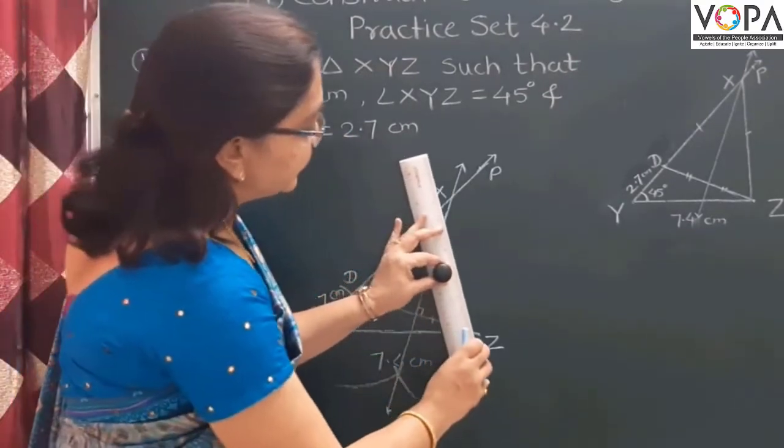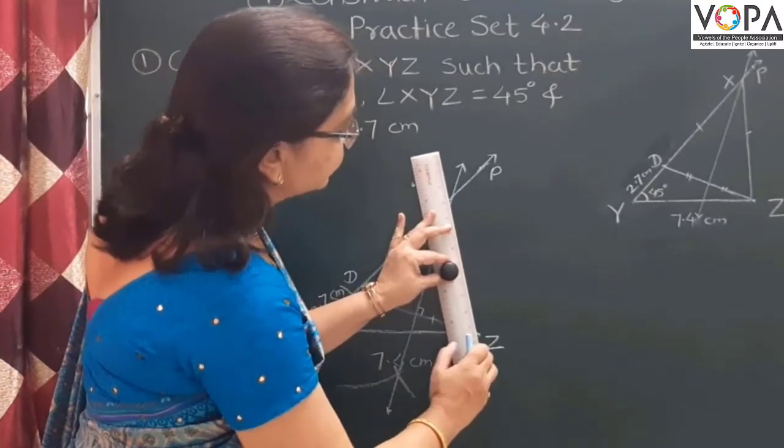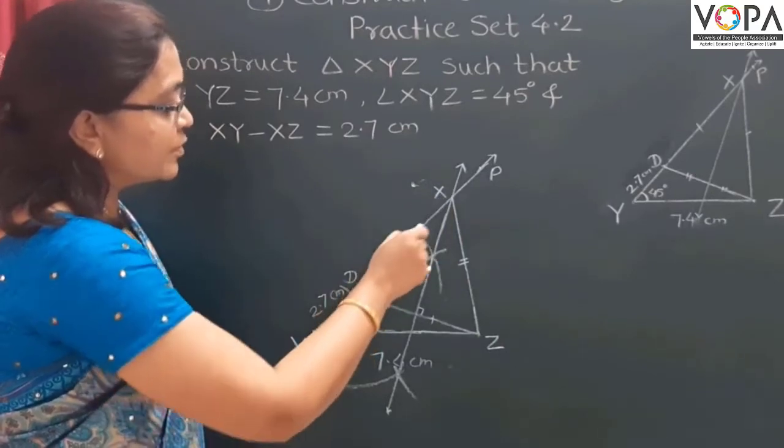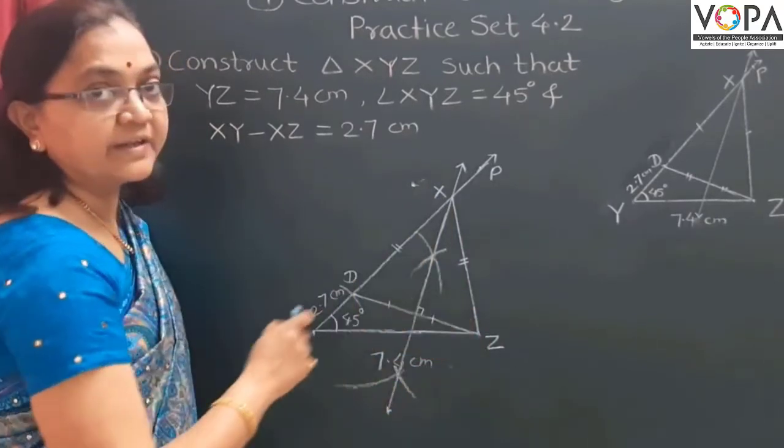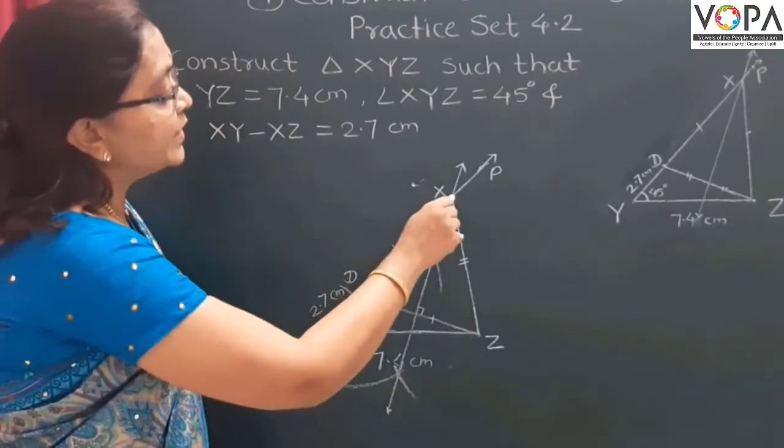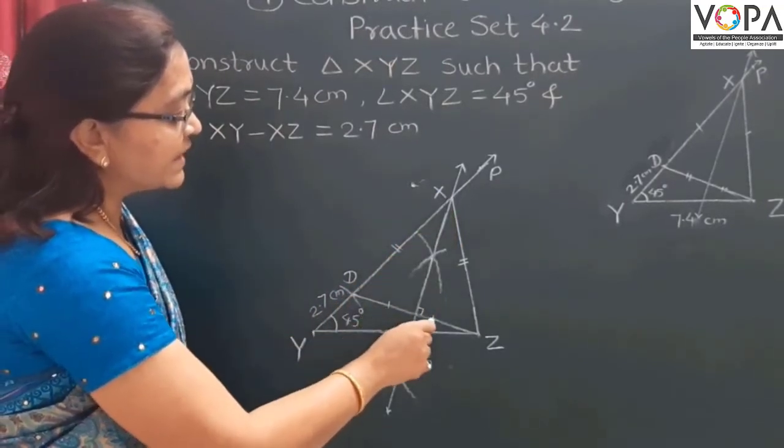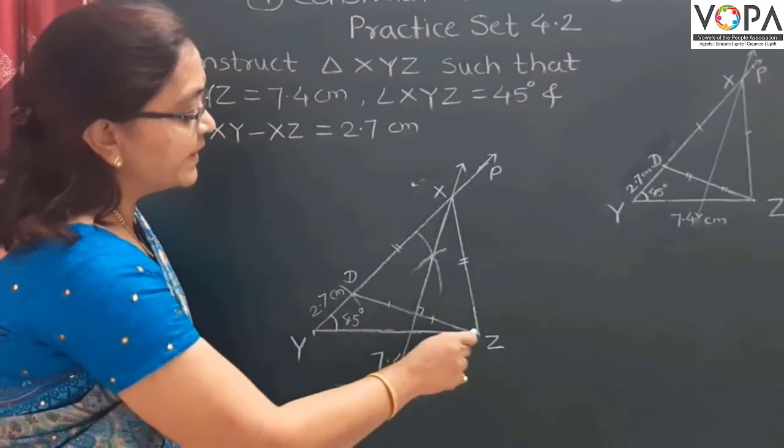Draw segment XZ. Point X is equidistant from points D and Z. That's why point X lies on the perpendicular bisector of segment DZ.